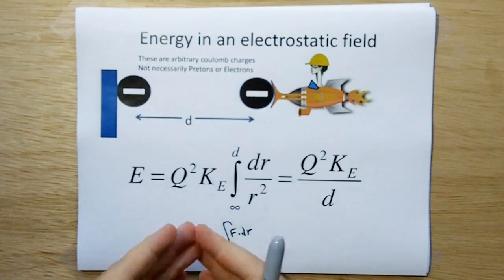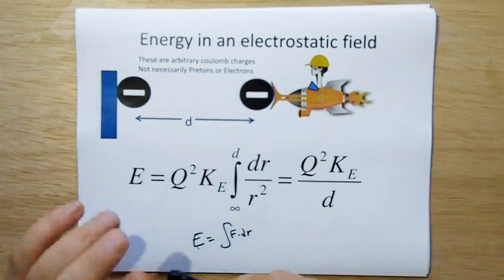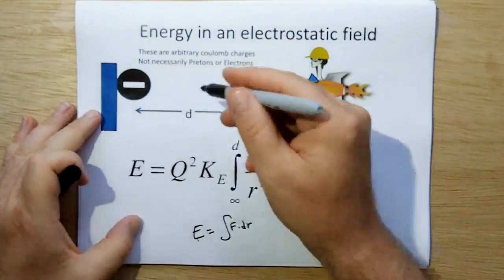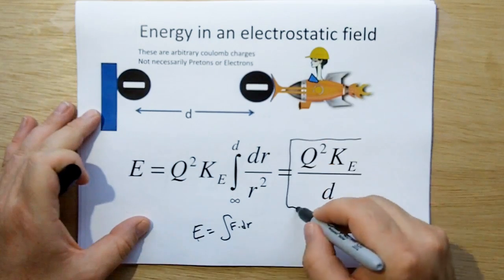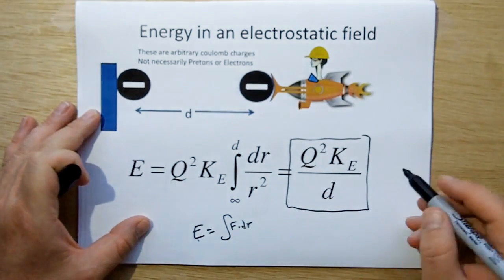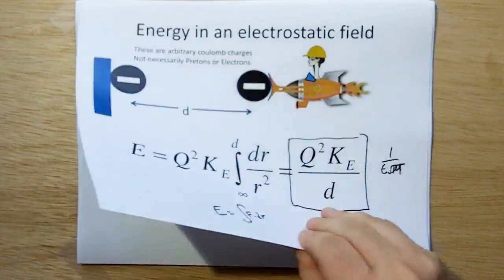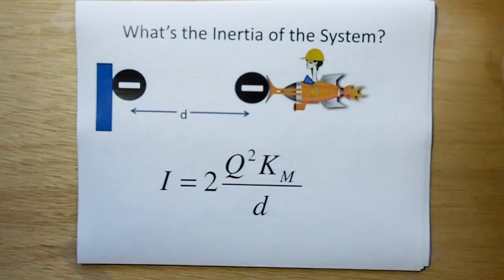Okay, now if we do all the calculations, then we come up with that the energy in this system that's available for work is the charge squared times the electrical constant. Okay, so now, but what's the inertia of the system?